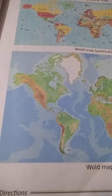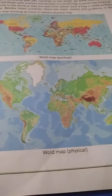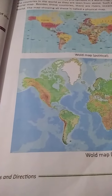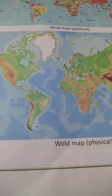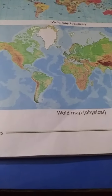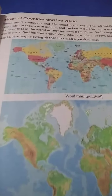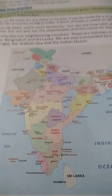Besides these countries, there are rivers, oceans and landforms in the world. The map showing all these is called a physical map. This is a picture of the world physical map, and this is a picture of the world political map.